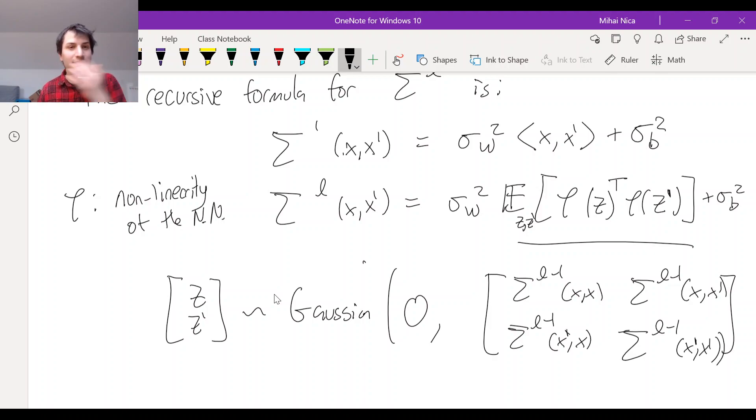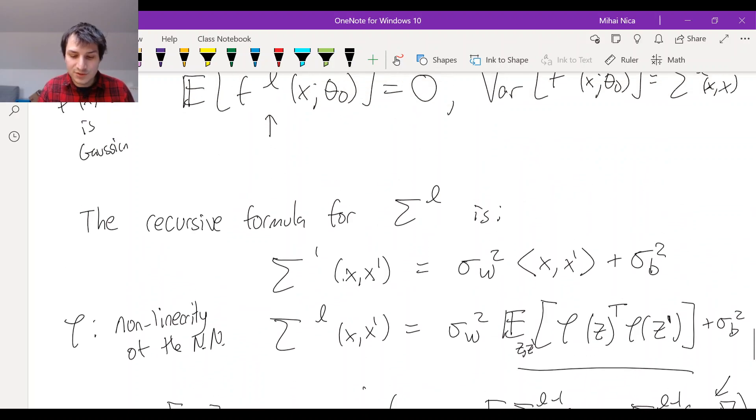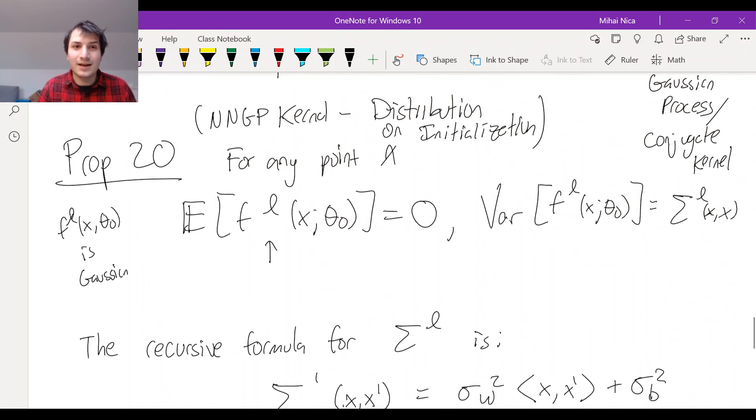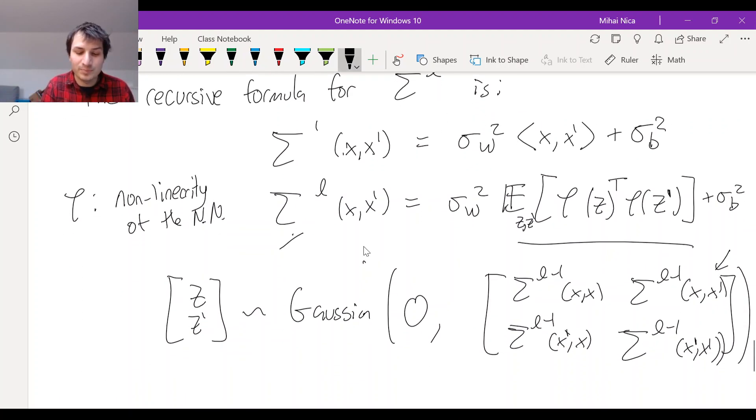So to go from one layer to the next layer, you're doing an expected value of applying the non-linearity to Gaussian random variables that are distributed like the kernel from the previous layer. And that gives you the kernel for the current layer. And so this Gaussian distribution propagates through the network. And at any given layer, you have a Gaussian and its covariance is getting updated in this funny way by using this formula. And so we'll see in the proofs how this goes.